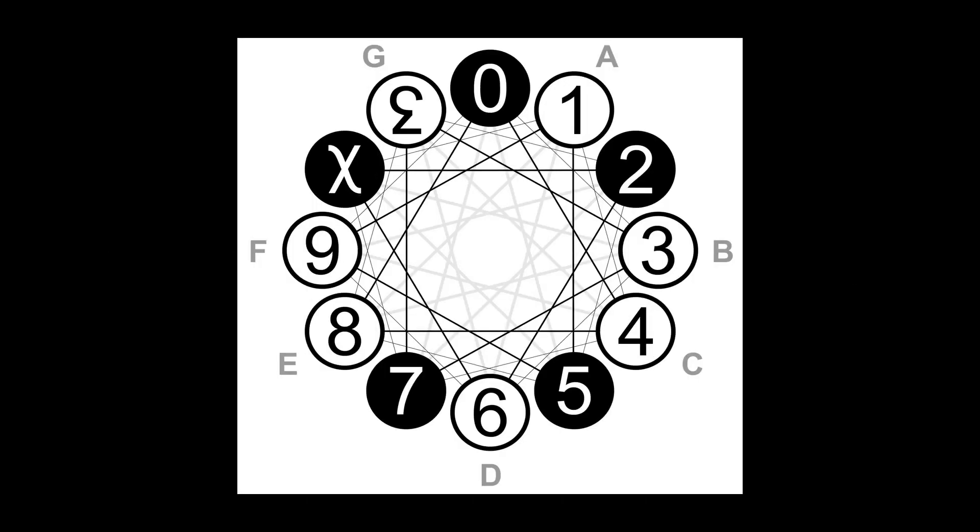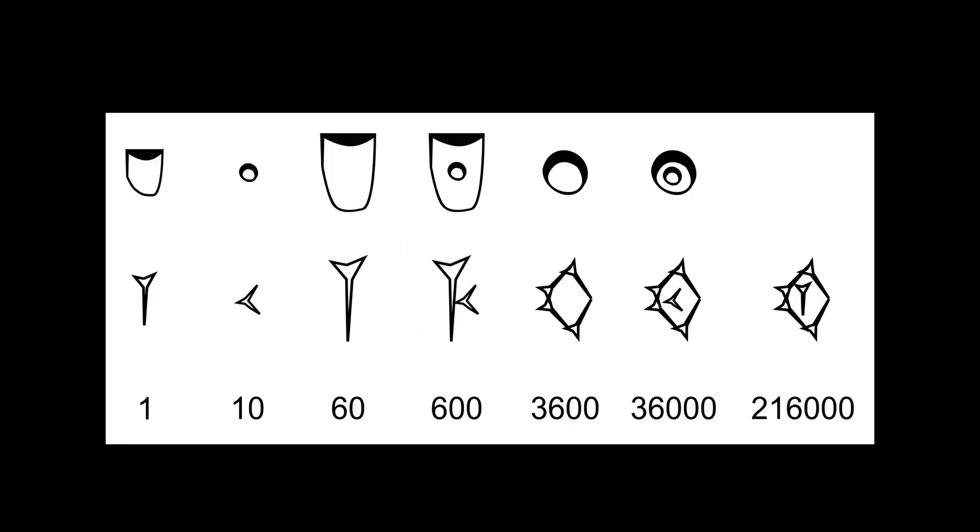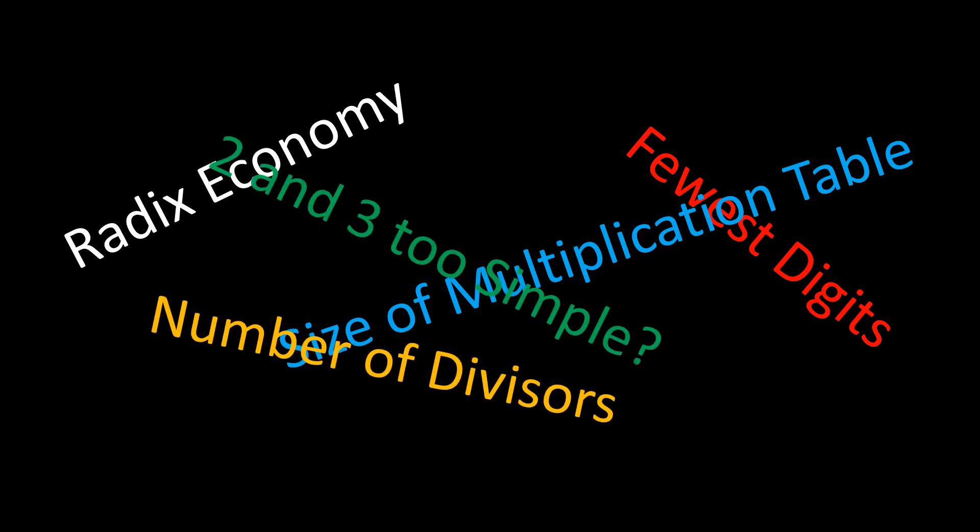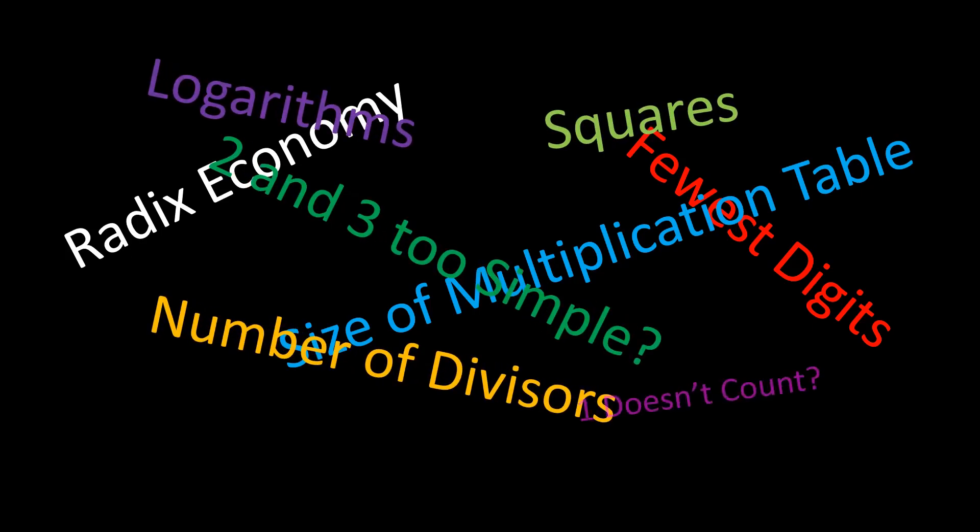In fact, I was originally going to do a whole thing about what is the best base for a number system, but I decided to back up and do radix economy first for two reasons. One, the best base turns out to be a much harder question than I bargained for. I couldn't find a straightforward way to quantify my intuitions about what makes a base easy to use.